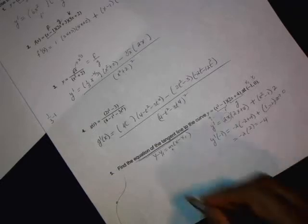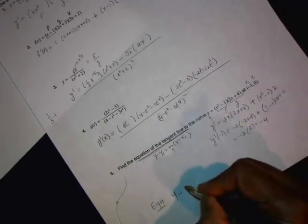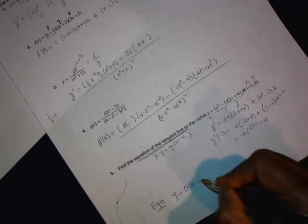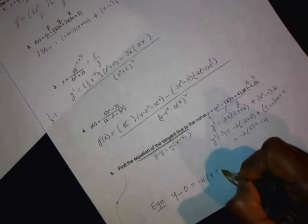So, this is 4 minus 2, which is 2. There we go. So, it goes negative 4. So, the answer, y minus 0, is negative 4 times x minus negative 1. So, it's x plus 1.